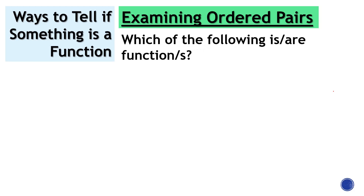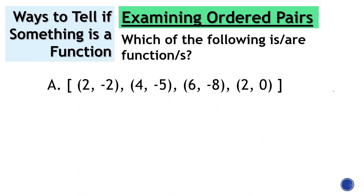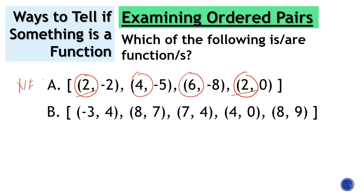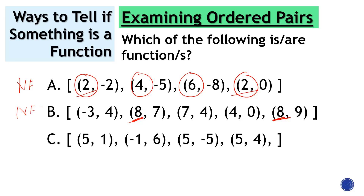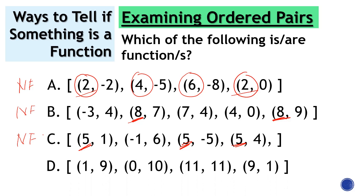What if we have a set of ordered pairs? All we need to do is look at the x-coordinates. If any x-coordinate appears more than once, it's not a function. In set A, we're looking at two twos, so A is not a function. For letter B, we have two eights, so it's not a function. For letter C, we have three fives, so C is not a function. For letter D, all x-coordinates are different, therefore letter D is a function.